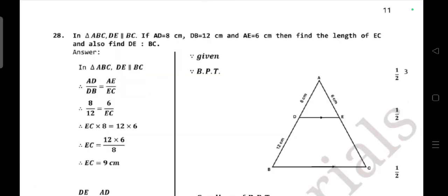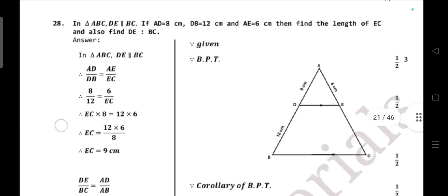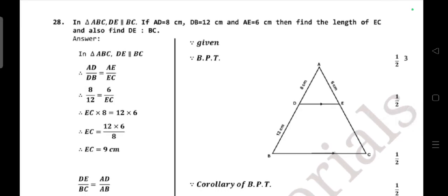For question number 28: in the triangle ABC, D is parallel to BC. If AD = 8 cm, DB = 12 cm, AE = 6 cm, then find the length of EC. Also find DE to BC ratio.